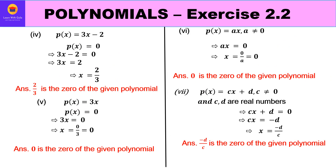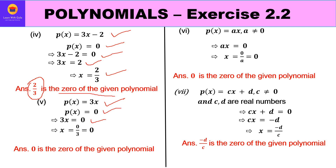For part four, p(x) = 3x - 2: set 3x - 2 = 0, so 3x = 2, giving x = 2/3. Therefore 2/3 is the zero of the polynomial. For part five, p(x) = 3x: set 3x = 0, so x = 0. Therefore 0 is the zero of this polynomial.